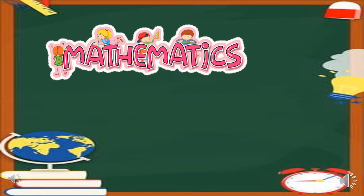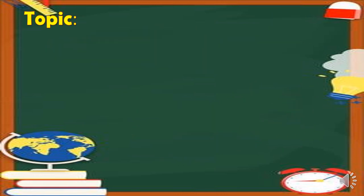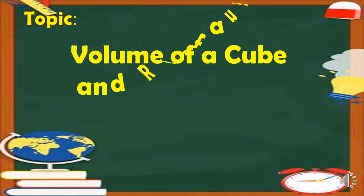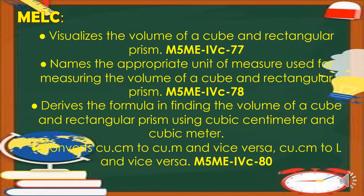Good day, learners. Our subject for today is Mathematics 5 for Quarter 4, Week 2. Our topic is Volume of a Cube and Rectangular Prism. For the most essential learning competencies: visualizes the volume of a cube and rectangular prism, names the appropriate unit of measure used for measuring the volume of a cube and rectangular prism, derives the formula in finding the volume using cubic centimeter and cubic meter, converts cubic centimeter to cubic meter and vice versa, and cubic centimeter to liters and vice versa.